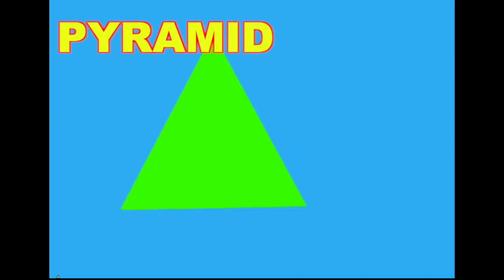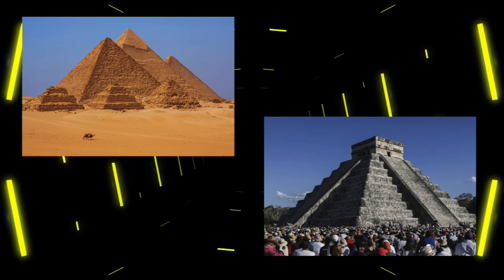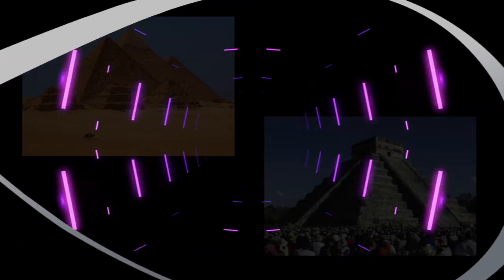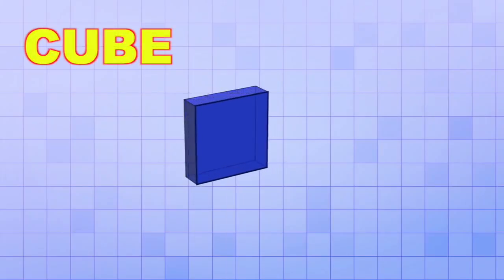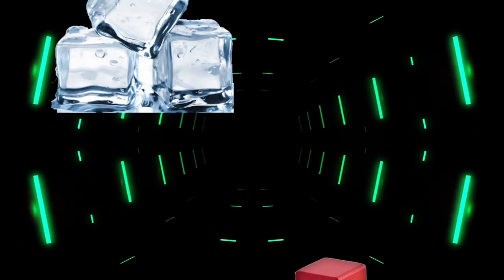A 2D triangle becomes a 3D pyramid, like the ones in Egypt and Mexico. I know what comes next. A square becomes a cube like these ice cubes or building blocks. Excellent!